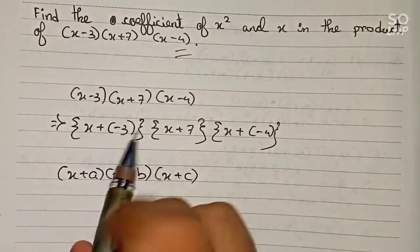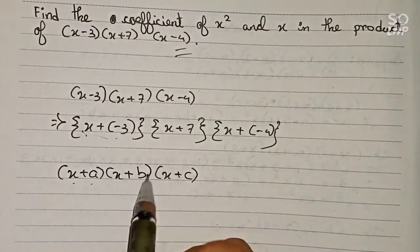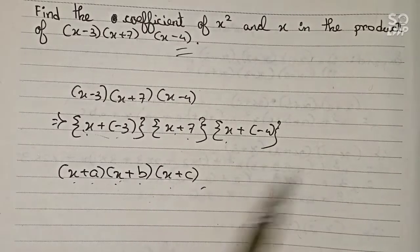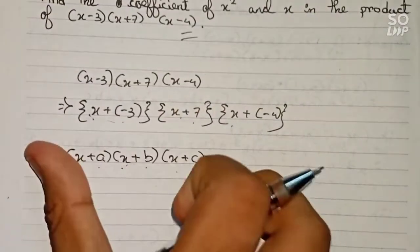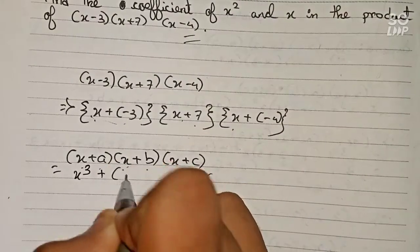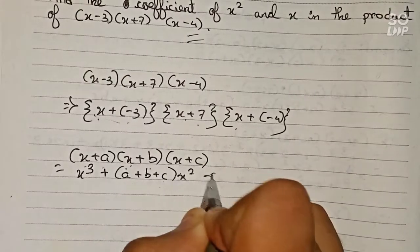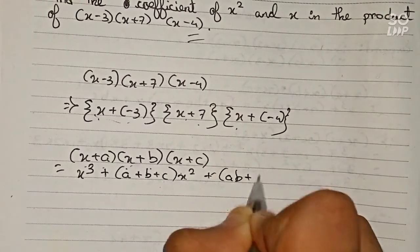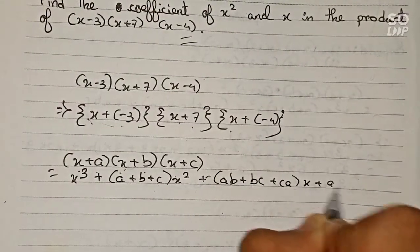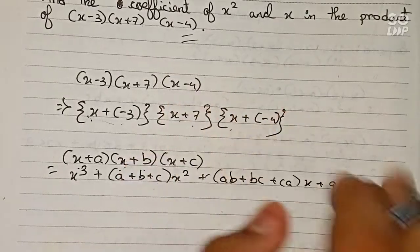Here a equals minus 3, b equals 7, and c equals minus 4. The formula expands to: x cubed plus (a plus b plus c) times x squared plus (ab plus bc plus ca) times x plus abc.